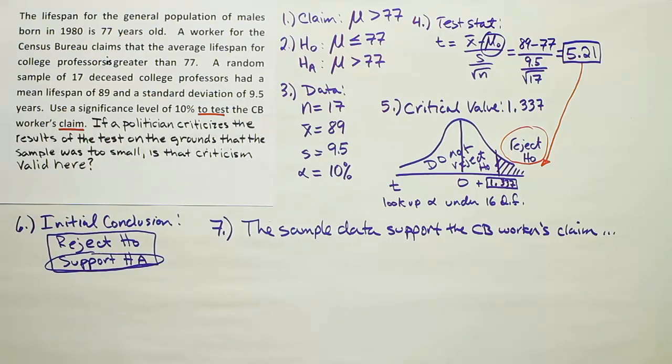The reason why it's not valid here is because in this case, we're able to reject H0. We saw in an earlier problem that when we weren't able to reject H0, you can criticize the t-test then as basically being too weak, potentially. Because the problem with a t-test is that because of the small sample size, the test is a little less powerful than the z-test. And what that means is that the t-test has a harder time rejecting H0.